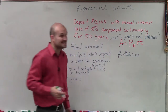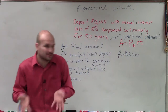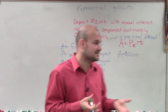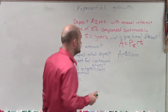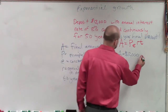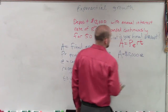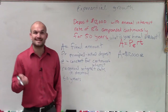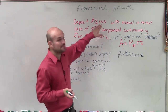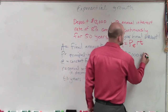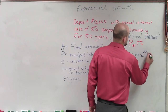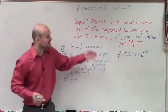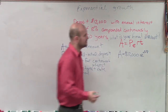E is a constant — we don't plug anything in for E. E is going to be our constant for continuous interest, so that's going to stay. R is our interest rate in decimal form, so 8% in decimal form is going to be 0.08. And then T is years — we have 50 years.